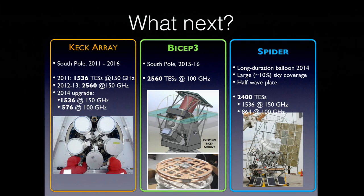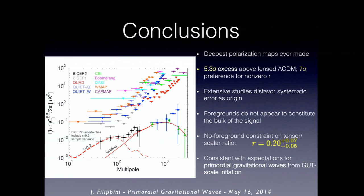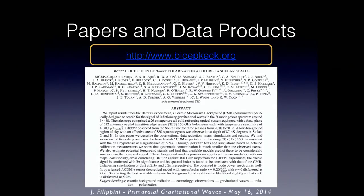We've continued working and observing with more powerful instruments at multiple frequencies from the ground and the air — there'll be a lot coming from us in the future post-BICEP-2. The conclusions for now: these are the deepest polarization maps ever made. There's a five-to-seven sigma excess that looks just like a primordial gravitational wave signal. Extensive studies disfavor a systematic error origin. Foregrounds do not appear, given existing data, to constitute the bulk of the signal. The no-foreground constraint gives R of about 0.2, consistent with expectations for primordial gravitational waves from GUT-scale inflation. This is the beginning of B-mode cosmology — extremely exciting. Papers and data products are posted at bicepkeck.org.